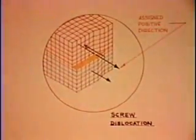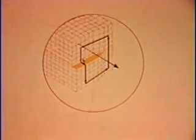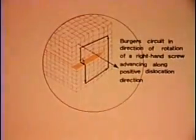The Burgers circuit lies on one twist of the screw or helicoid. The Burgers vector of the screw dislocation is the pitch of the screw and is thus parallel to the dislocation line.